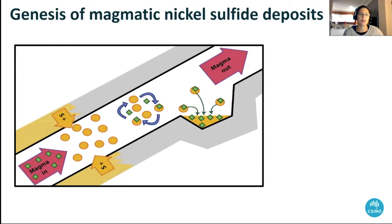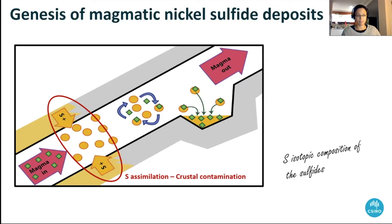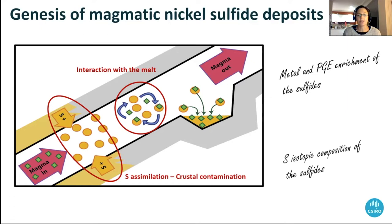All of you are quite well familiar with the accepted model for the genesis of magmatic nickel sulfide deposits. This diagram briefly goes through the most important processes at play. The two processes in particular that we are studying in this study are the process of crustal assimilation and sulfur contamination of the melt, and the interaction of the sulfide melt with the silicate melt.